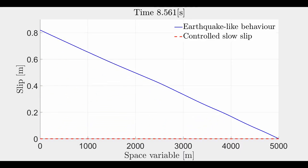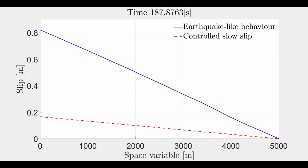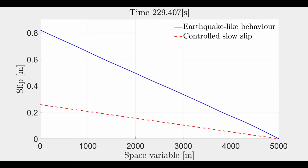The gain lambda 2 was the same for the three cases and lambda 1 was designed according to the presented theorem. The following videos show how the presented control with the parameter A equal to zero is able to achieve a slow seismic response compared to the case of an earthquake-like behavior.